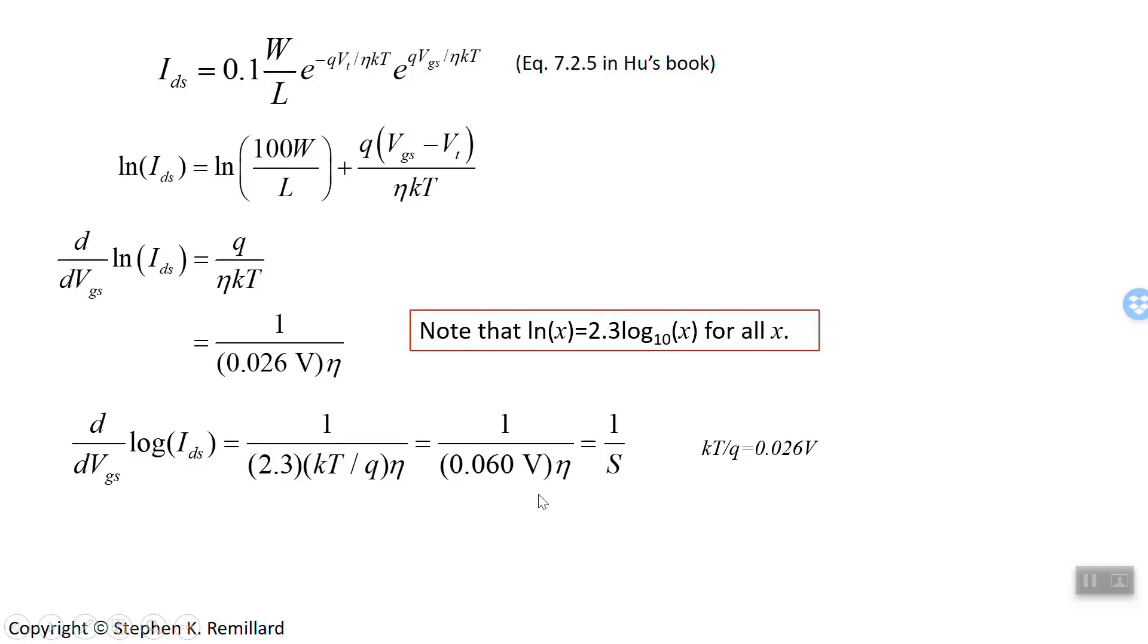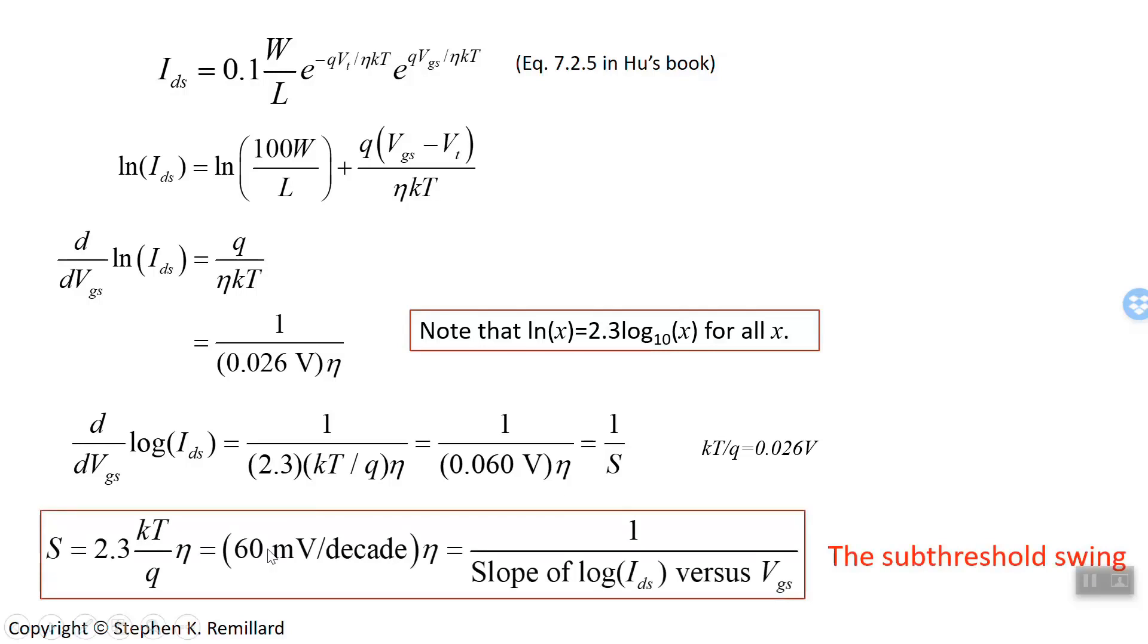And so the slope of the curve that is graphed is 1 over 2.3 KT over Q eta. And KT over Q, just being 0.026, means this is 1 over 0.06 eta. And this is 1 over the slope of the log of the drain current versus the gate voltage. That's what we're calling big S, the subthreshold swing, is 1 over that slope. And so we just found an expression for the subthreshold swing that we've been talking about. It's 0.06 volts times eta. Very simple.